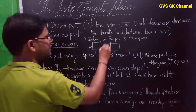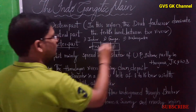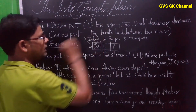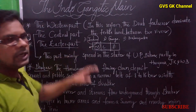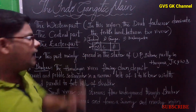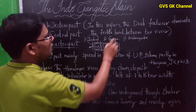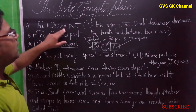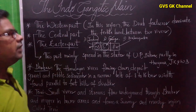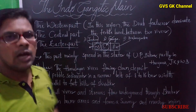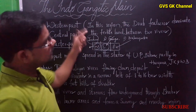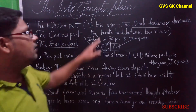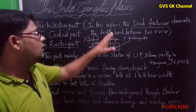The western part of the Indo-Gangetic plain was formed with the Indus and its tributaries — the Jhelum, Chenab, Ravi, Beas, and Sutlej. The central part was formed with the Ganga river, and the eastern part was formed with the Brahmaputra river. In the western part, the Doab features dominate — the fertile land between two rivers is called a Doab.